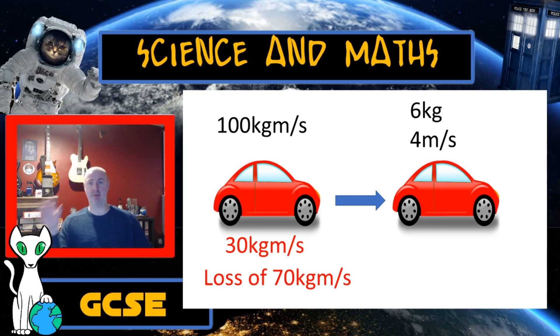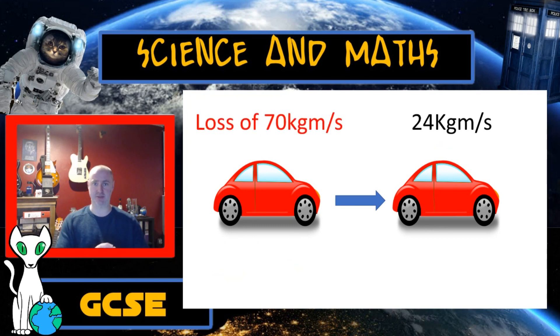But I can't make use of that information until I know the starting momentum of the car in front. The car in front had a velocity of 4 meters per second and a mass of 6. 6 times 4 gives us 24 kilogram meters per second.